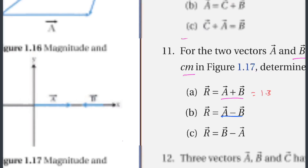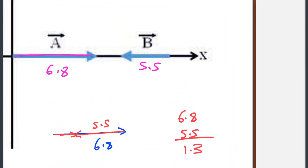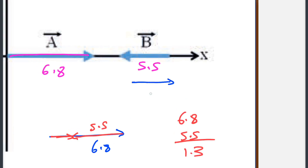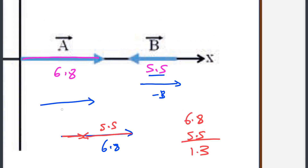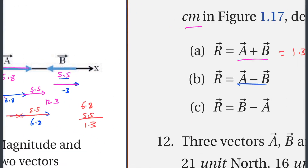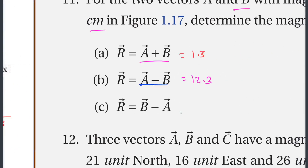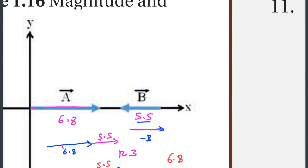Now find A minus B. To subtract vector B, we reverse its direction to get negative B, then add it to A. So A minus B equals A plus negative B. We can also determine B minus A by reversing the operation.